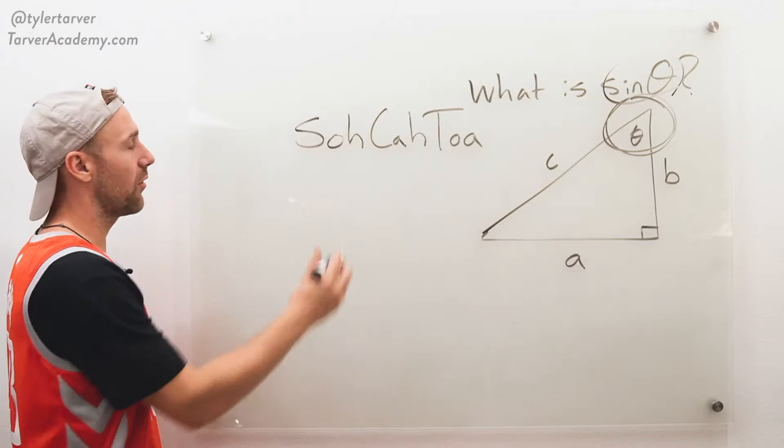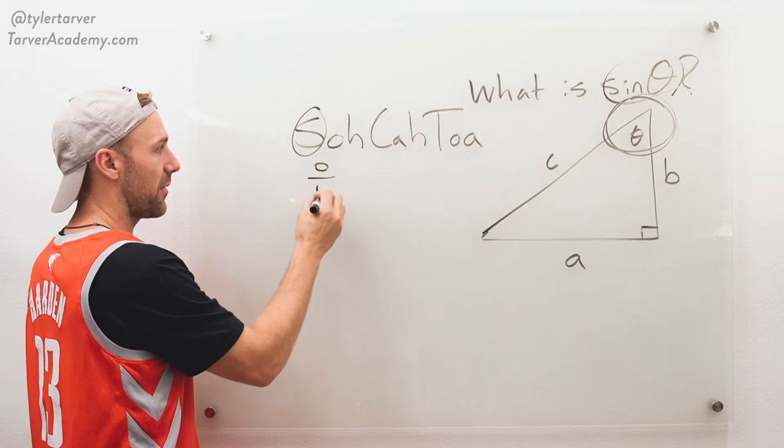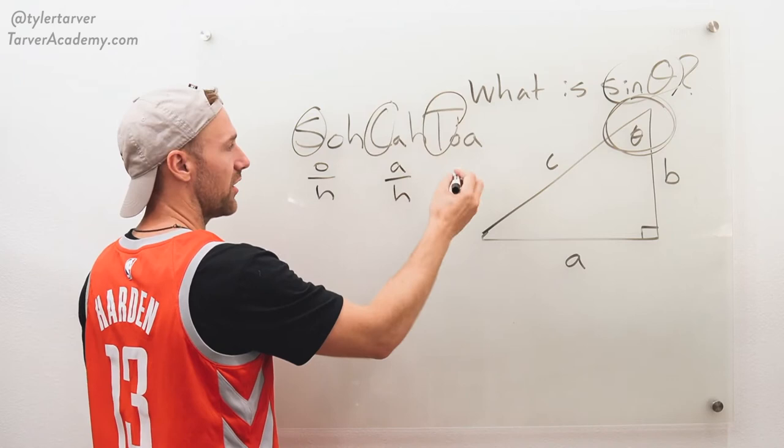So what we're going to do is that means that sine is opposite over hypotenuse, cosine is adjacent over hypotenuse, and TOA is tangent opposite over adjacent. So that's how you would break down all of these.